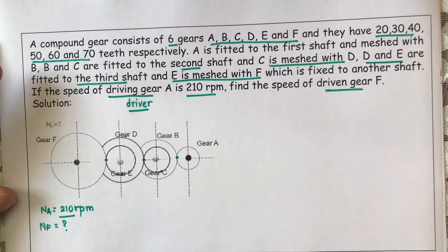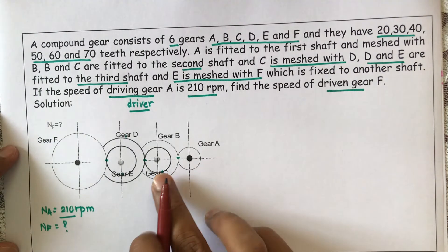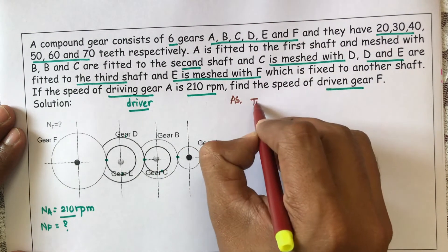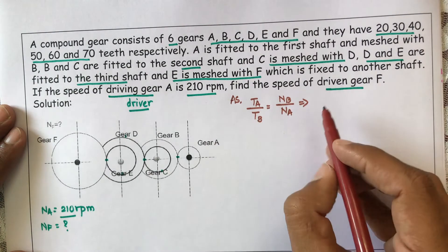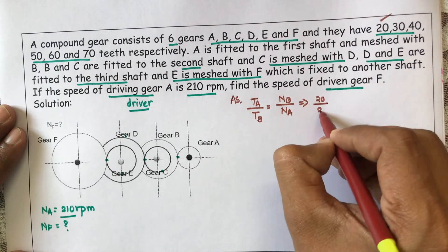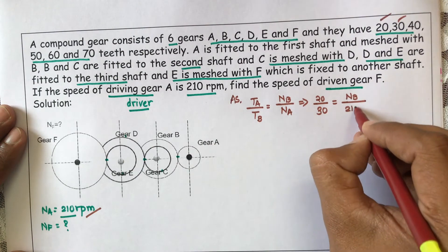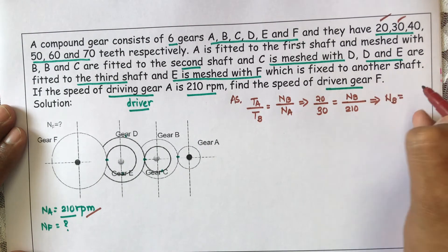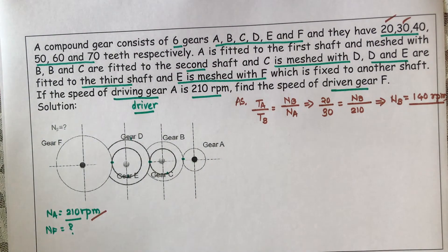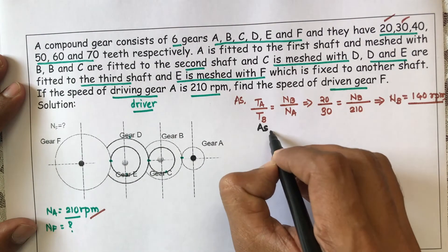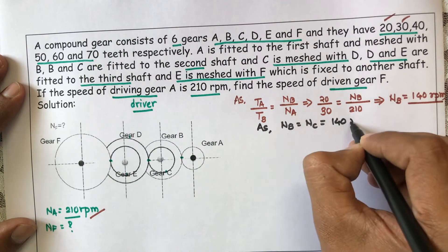We need to calculate NF. Going step by step: gear A is meshed with gear B, so TA / TB = NB / NA. Putting in the values: 20 / 30 = NB / 210. Therefore, NB = 140 RPM. As B and C are mounted on the same shaft, NB = NC = 140 RPM.